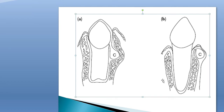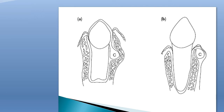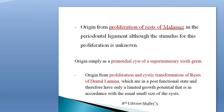Another theory states the origin is from proliferation of rests of Malassez in the periodontal ligament, although the stimulus for this proliferation is unknown. Another theory says the origin is simply as a primordial cyst of a supernumerary tooth germ — origin from proliferation and cystic transformation of rests of dental lamina which are in a post-functional state, and therefore have only a limited growth potential, in accordance with the usual small size of the cyst.